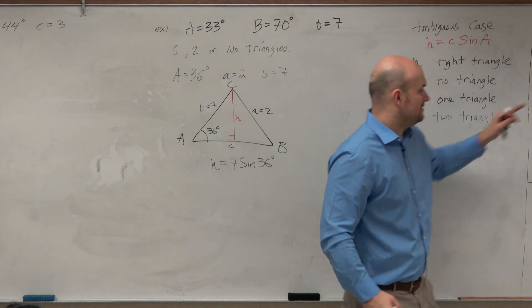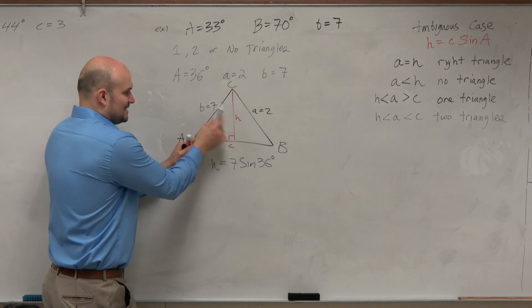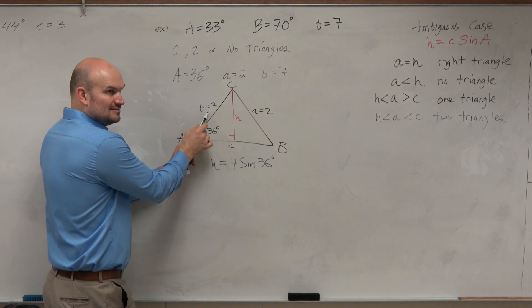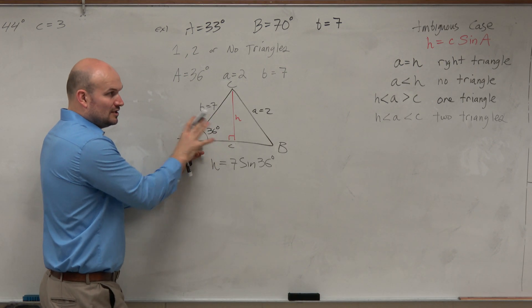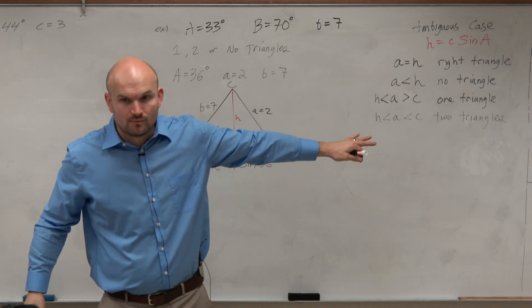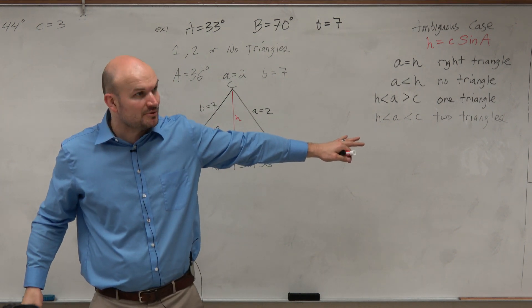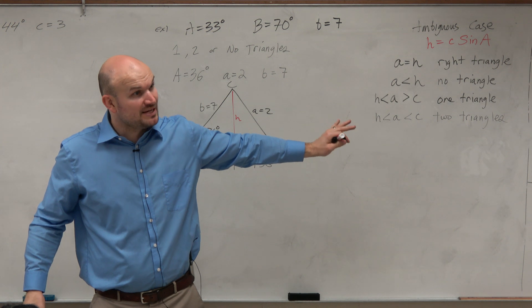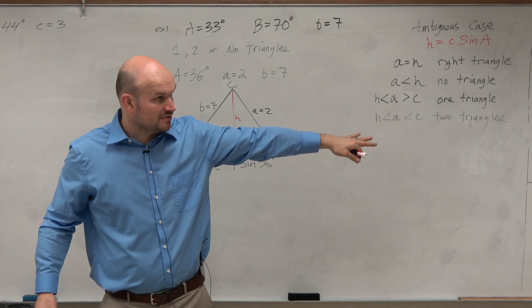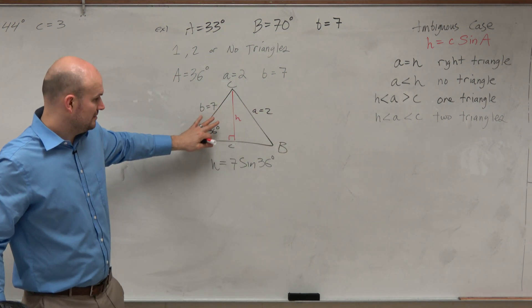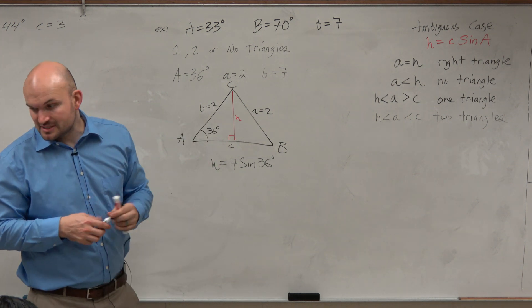it's that opposite over hypotenuse, right? Go off of the triangle. Don't get focused on what these variables are that I've been using. The variables are interchangeable. That's a big mistake students make. They get stuck on the variables and don't look at the triangle. H is 7 times sine of 36.